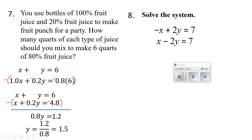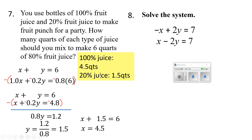Plugging y equals 1.5 into x plus y equals 6 gives x plus 1.5 equals 6, so x equals 4.5. That means there are 4.5 quarts of 100% juice and 1.5 quarts of 20% juice.